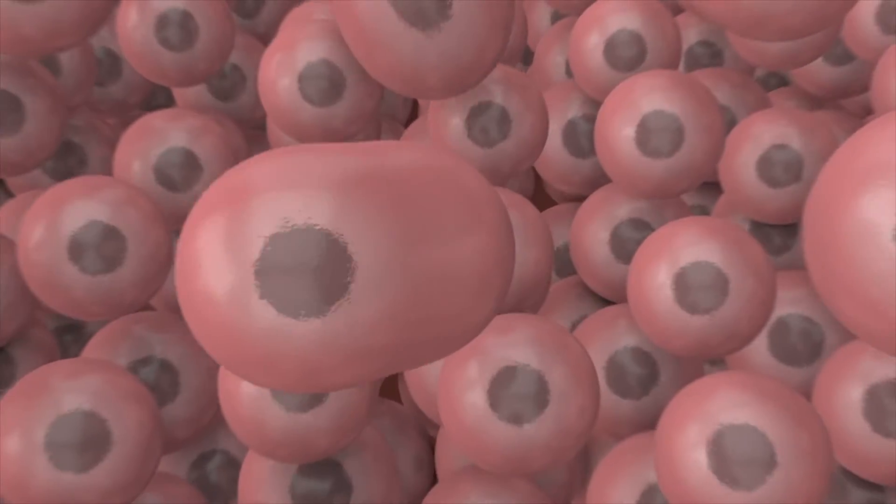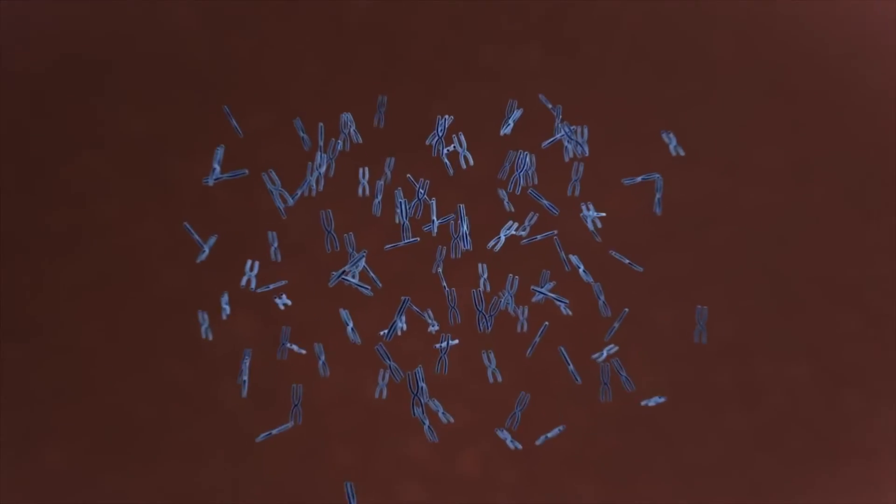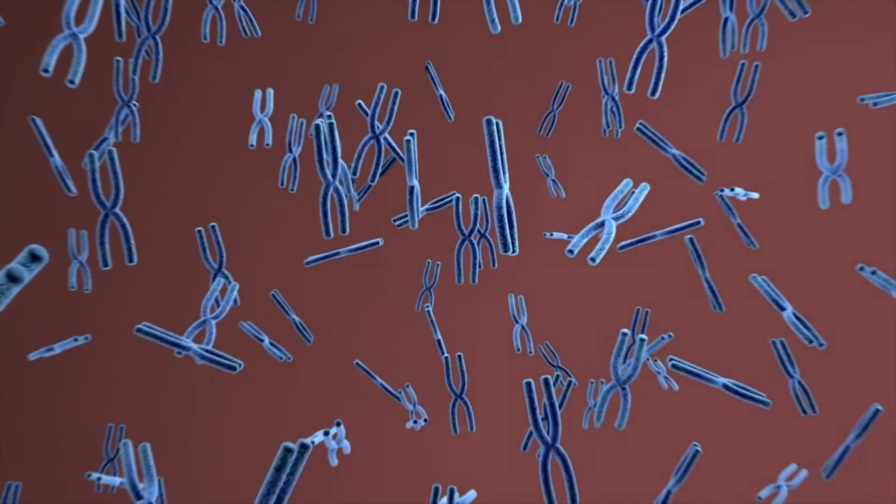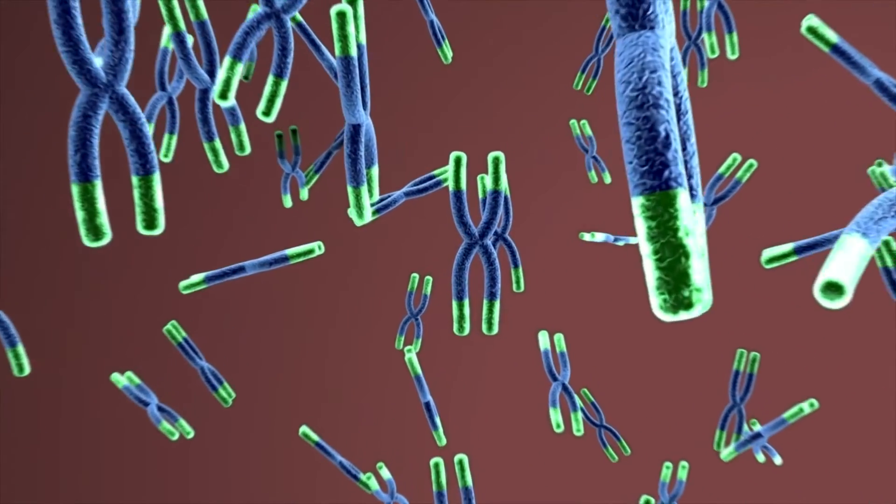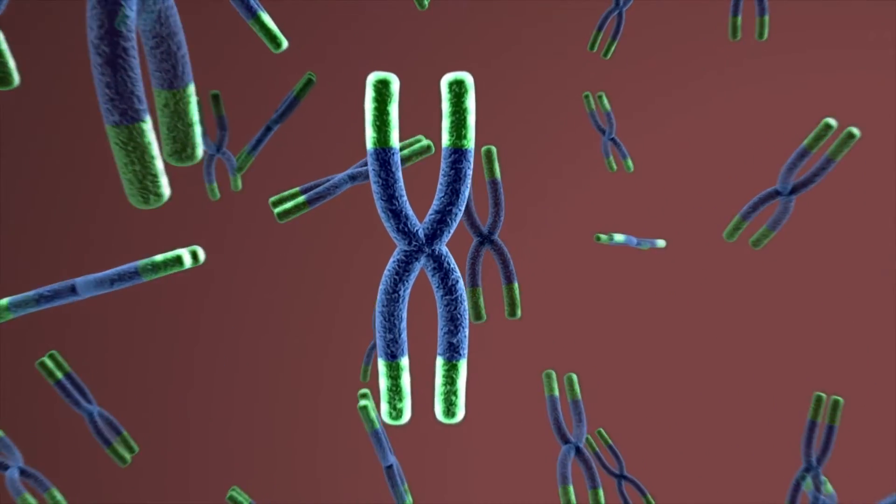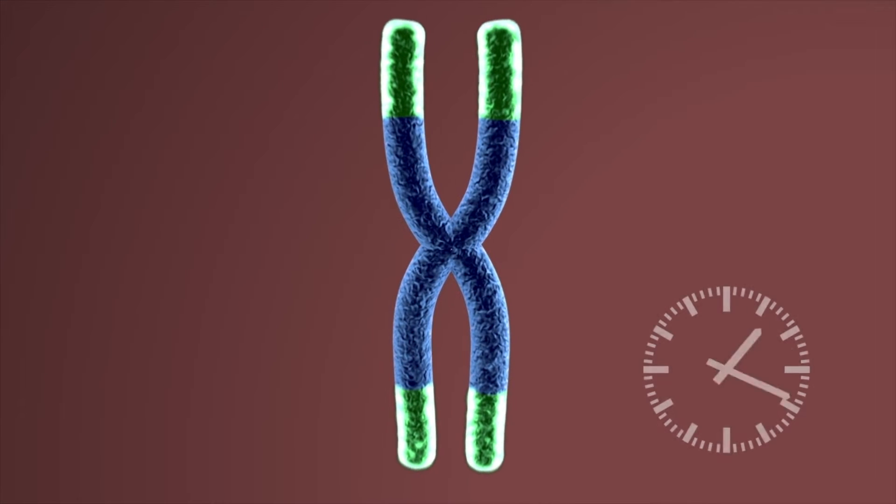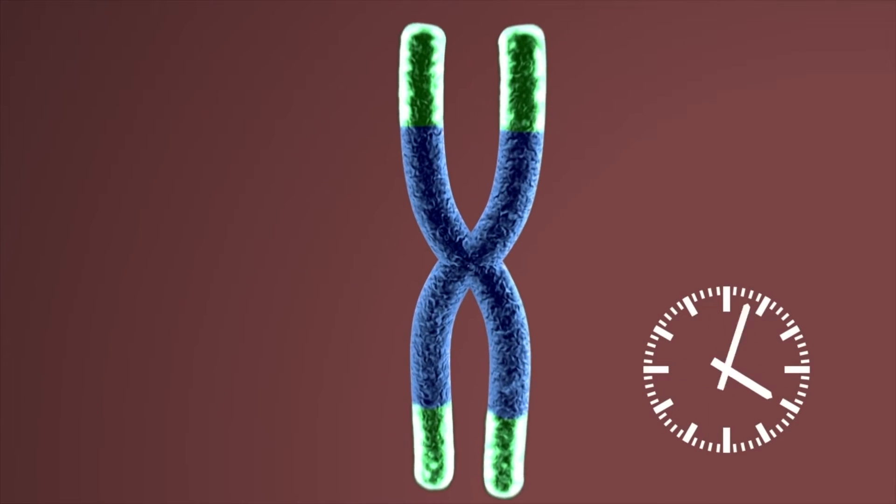But what about telomeres? What are they? Telomeres are structures made from DNA sequences and proteins. They are found at the ends of chromosomes in the structure of the cell. They are like the short plastic tip at the end of a shoelace. They represent a measurement for the biological age of cells.